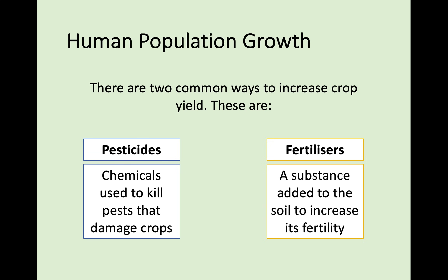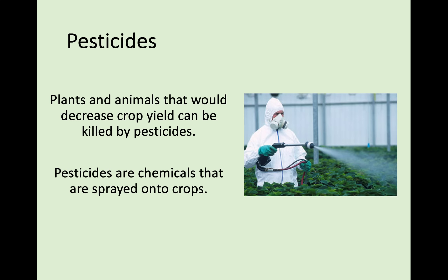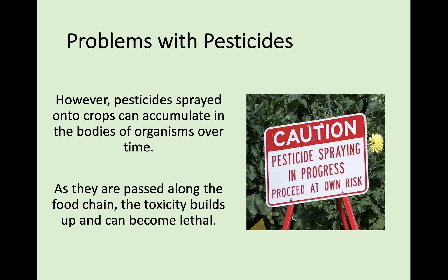We're going to look at both of these and at some alternative methods of increasing yield. Pesticides are simply sprayed on top of crops to kill plants and animals that decrease crop yield. The problem with spraying a harmful chemical on your crops is that it could accumulate in the bodies of organisms over time as they're passed along a food chain.